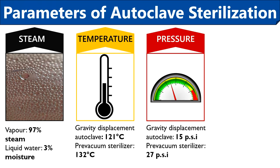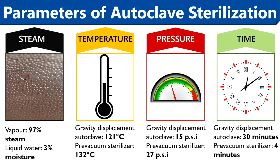Finally, the steam penetration into the objects placed inside the autoclave increases, which is necessary to kill microorganisms. The last factor is time. A gravity displacement autoclave takes 30 minutes and a pre-vacuum sterilizer takes 4 minutes to destroy microbial cells. Sterilization time may differ depending upon the type and load of contents. Autoclaves are recommended best that use high temperature and short sterilization time.